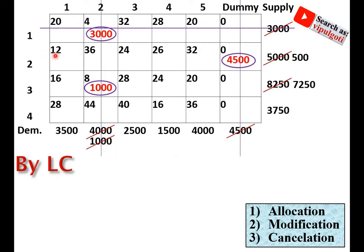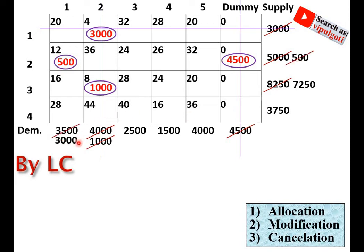Select the minimum cost once again — this cell is the minimum cost, so allocate the minimum value from the corresponding supply and demand, which is 500. Supply and demand are modified and that row is cancelled.